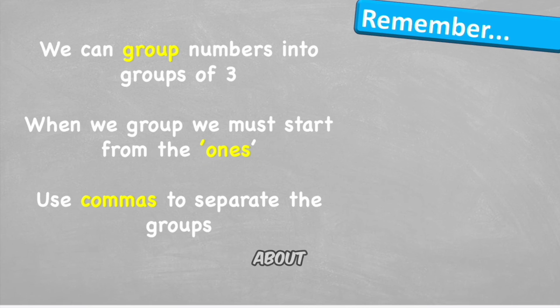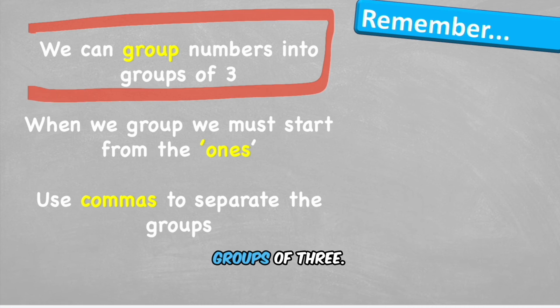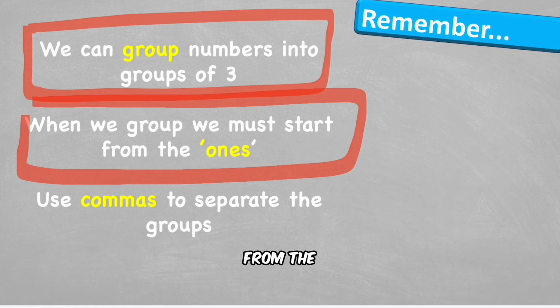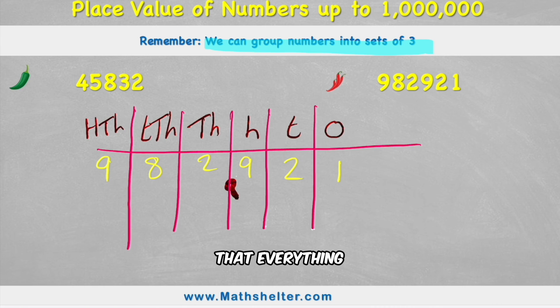So what to remember about place value of large numbers? Well, we can group numbers into groups of three. And when we group numbers, we must start from the ones. And we can use a comma to separate these groups. We also need to remember that everything to the left of the column you're looking at is times 10, and everything to the right would therefore be divided by 10.